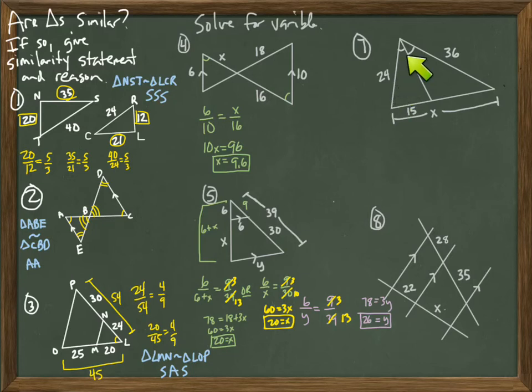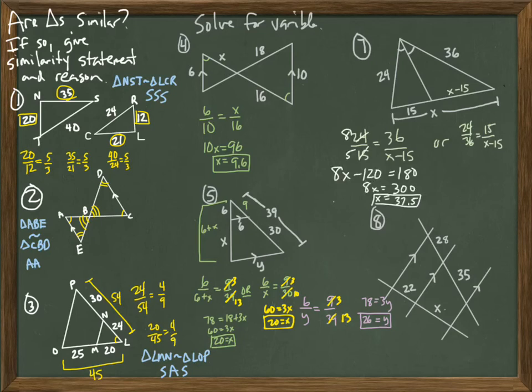Number 7, this is the angle bisector theorem that we did in section 6. It splits these two sides proportionally with the big side, opposite side, proportionally with the other two sides. The problem here is we don't know what this piece is. So what is it? Is it 15 minus X, or is it X minus 15? X minus 15. Set up your proportion accordingly. I just showed you two different ways. As long as you are consistent, it doesn't matter how you do it. Either way, we get 37.5.